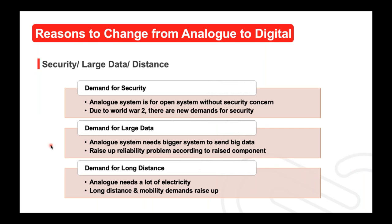The reason to shift from analog to digital is not an absolute change — just the percentage of analog and digital in communication has changed. Three major reasons: first, demand for security. Analog systems are open without any security concern, such as FM and AM radio. This demand for security started from World War II. Many new technologies came from military needs and were later applied to commercial fields.